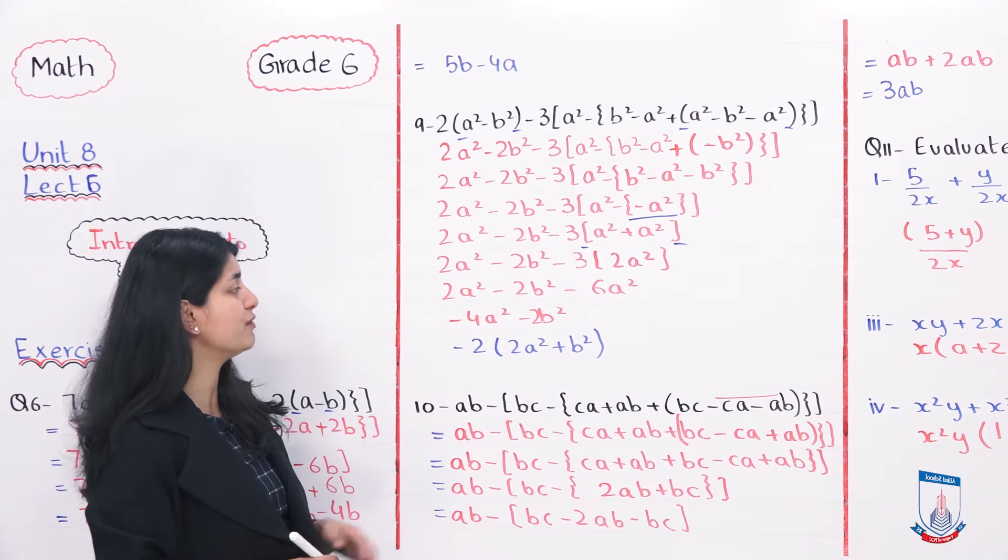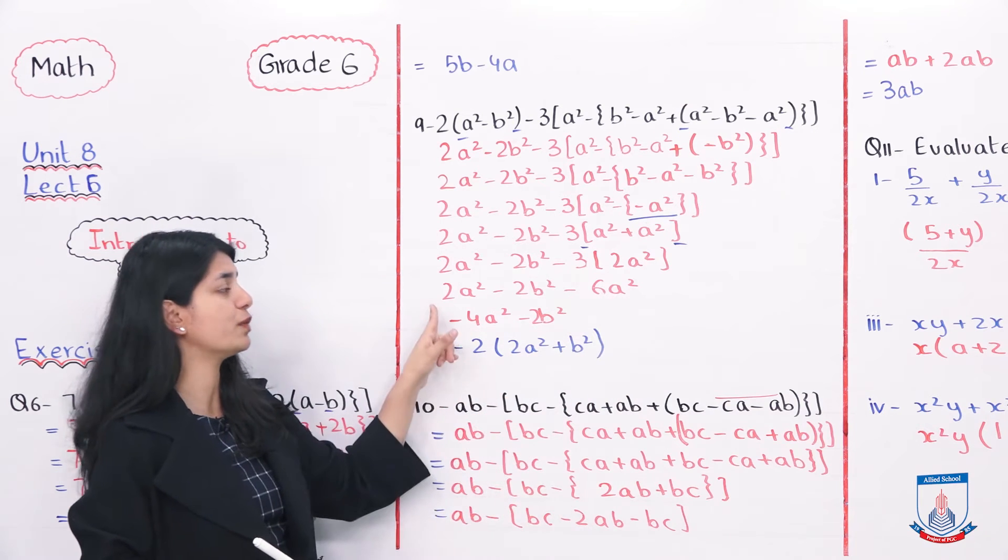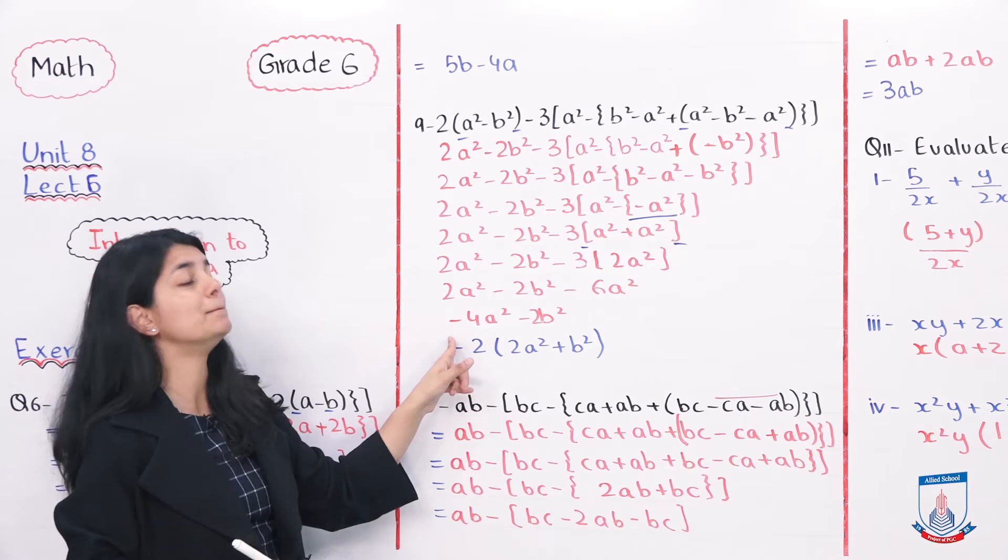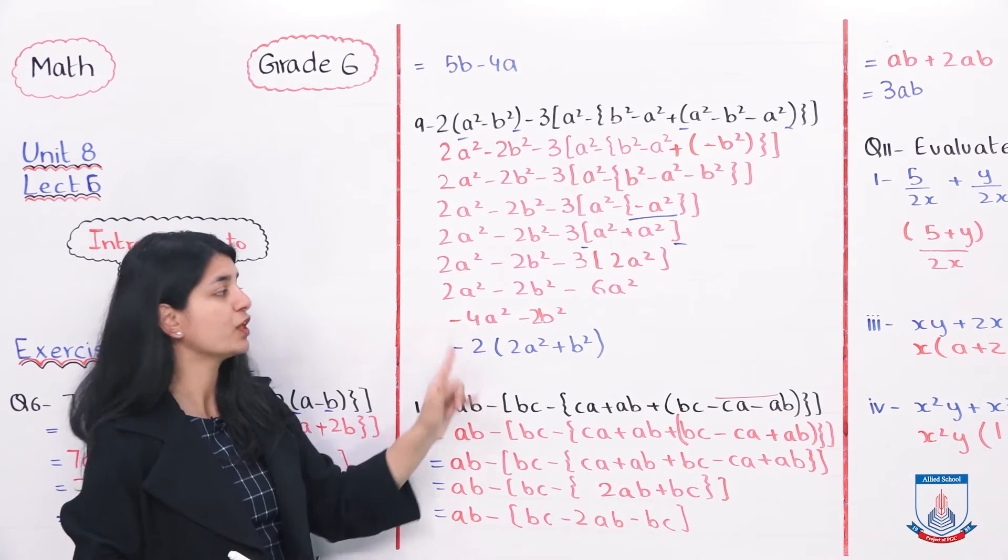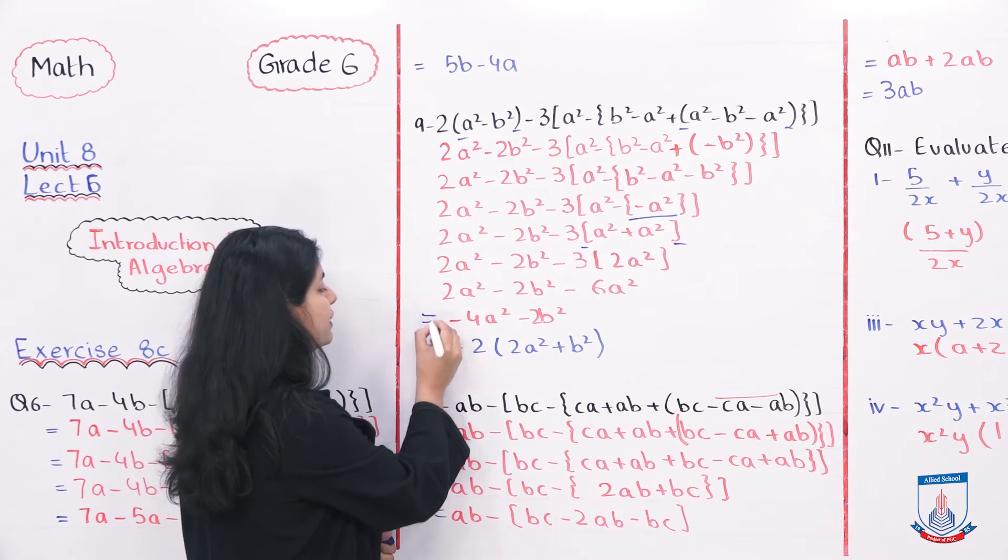Everything else se is the same. So 2A square minus 2B square minus 6A square. Ab yahan per what you have to do is, A square and A square will come together. Minus 6A square plus 2A square minus 4A square banne ga. Aur jo aapka minus 2B square hai, was as it is, yahan neeche aagya.